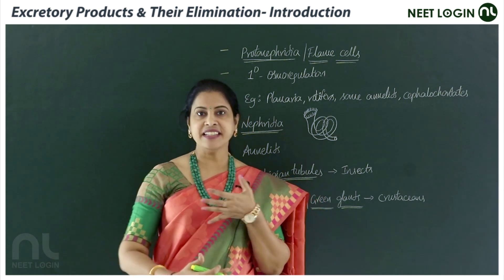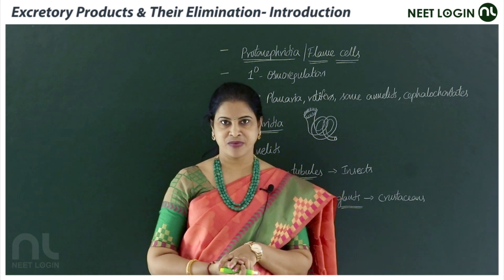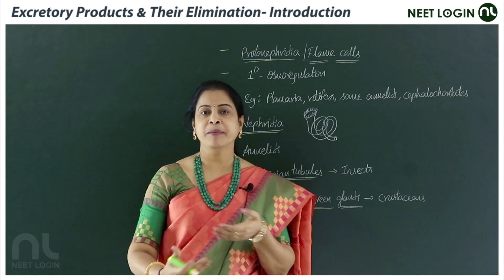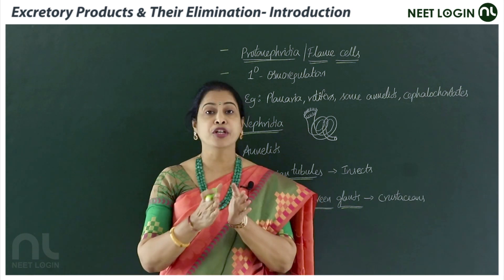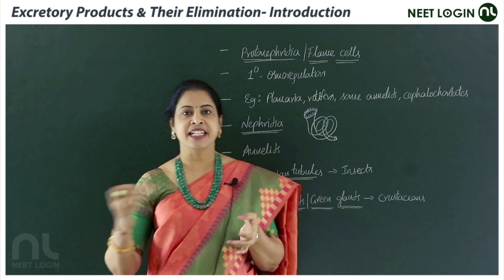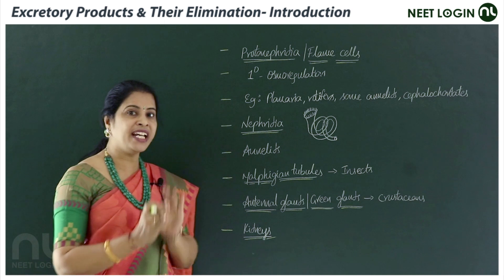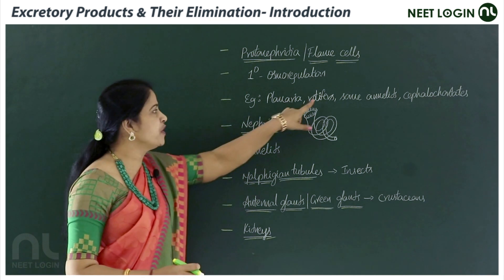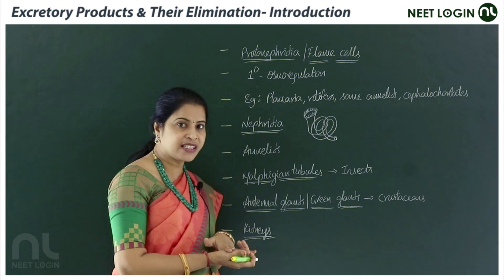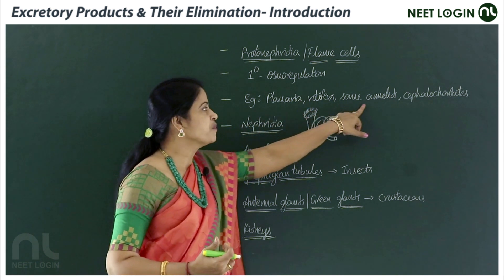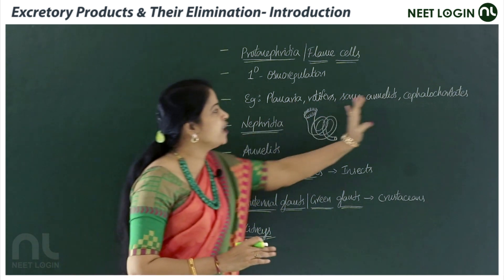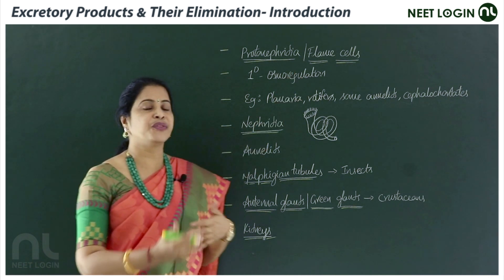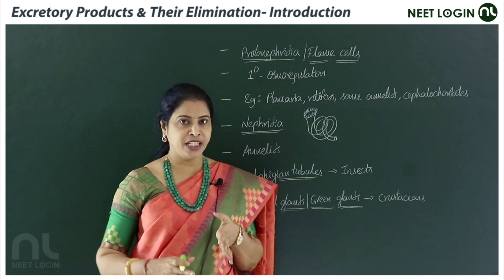Now let's discuss the evolutionary aspects of how excretory organs evolved across different phyla in the animal kingdom. In very simple organisms, there is no specific mechanism; waste is eliminated by simple diffusion. The first organs for waste elimination appear in planarians — flatworms belonging to platyhelminthes — and in rotifers, some annelids, and cephalochordata members. These are the protonephridia, or flame cells.